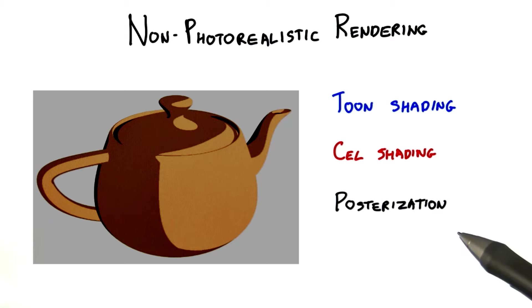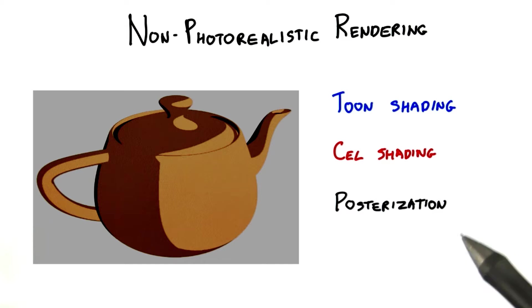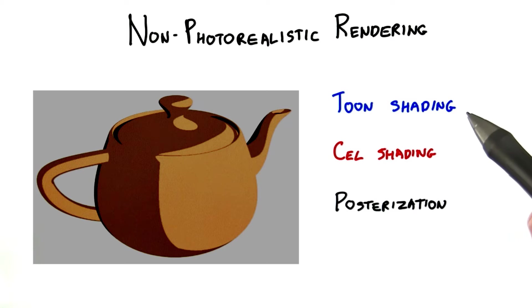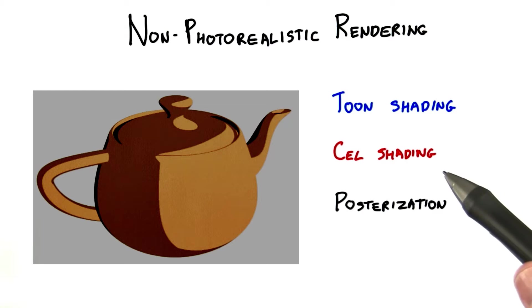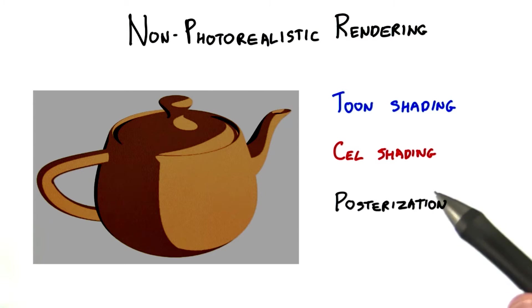This kind of reflection model is called toon shading or cell shading, or sometimes posterization. Toon is short for cartoon. Cell is short for celluloid, the material for the transparent sheets that are used when animation is drawn by hand.